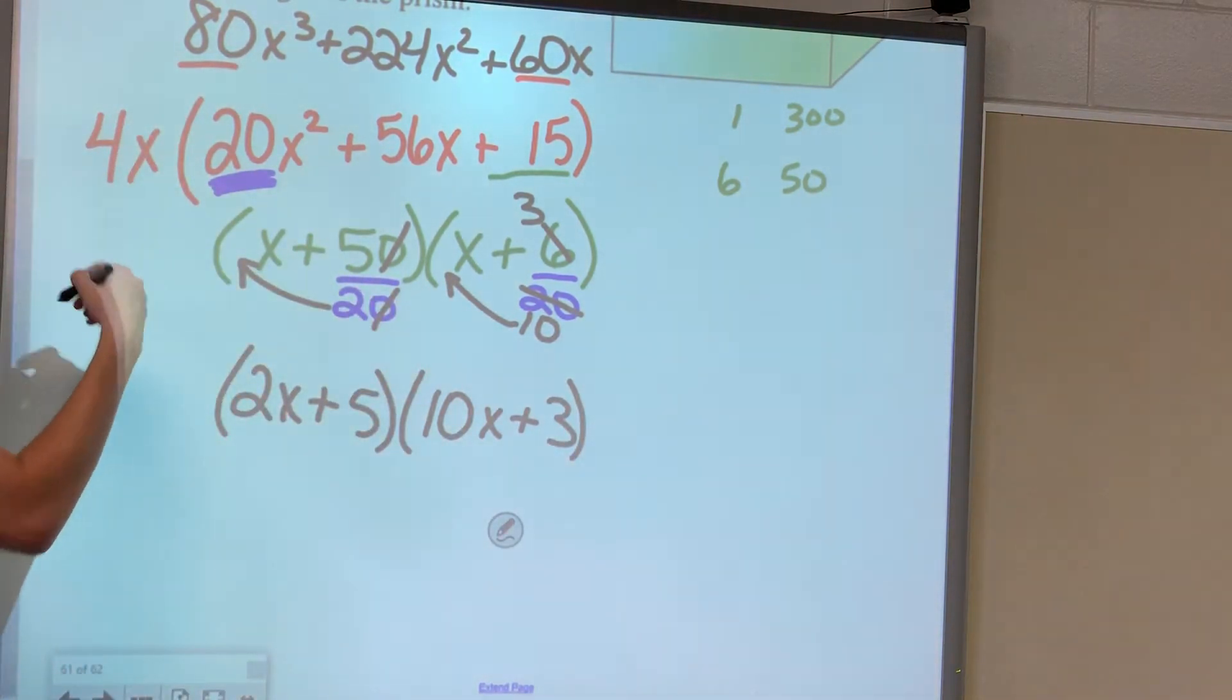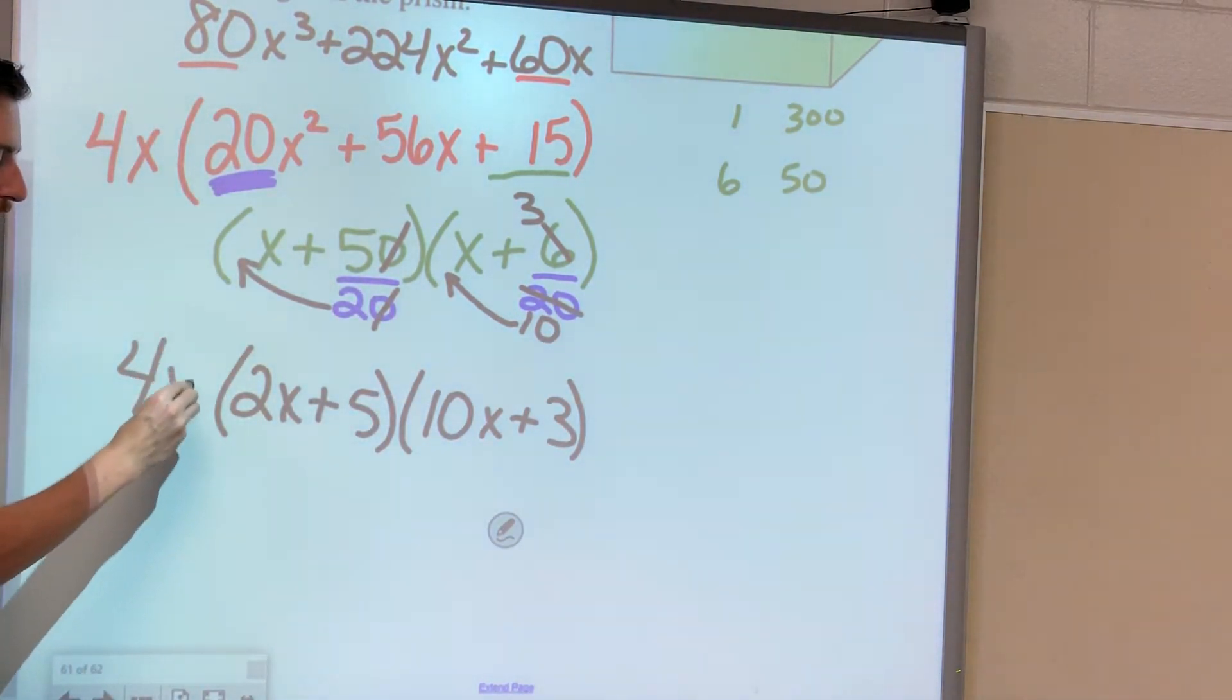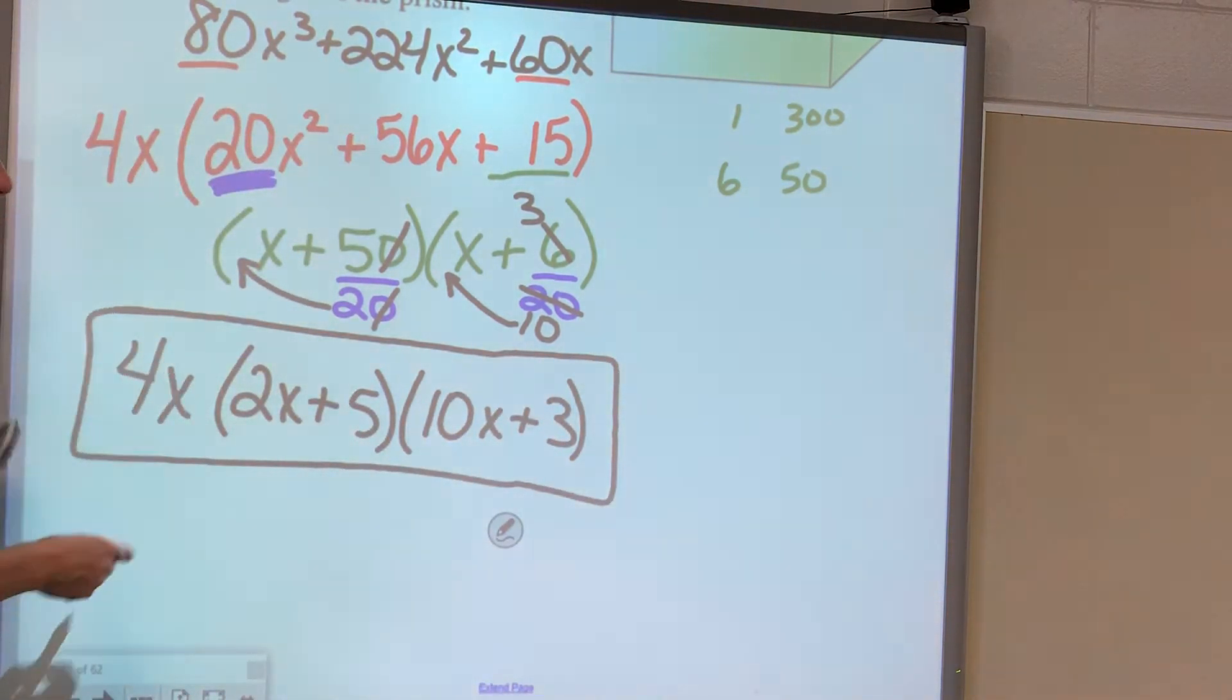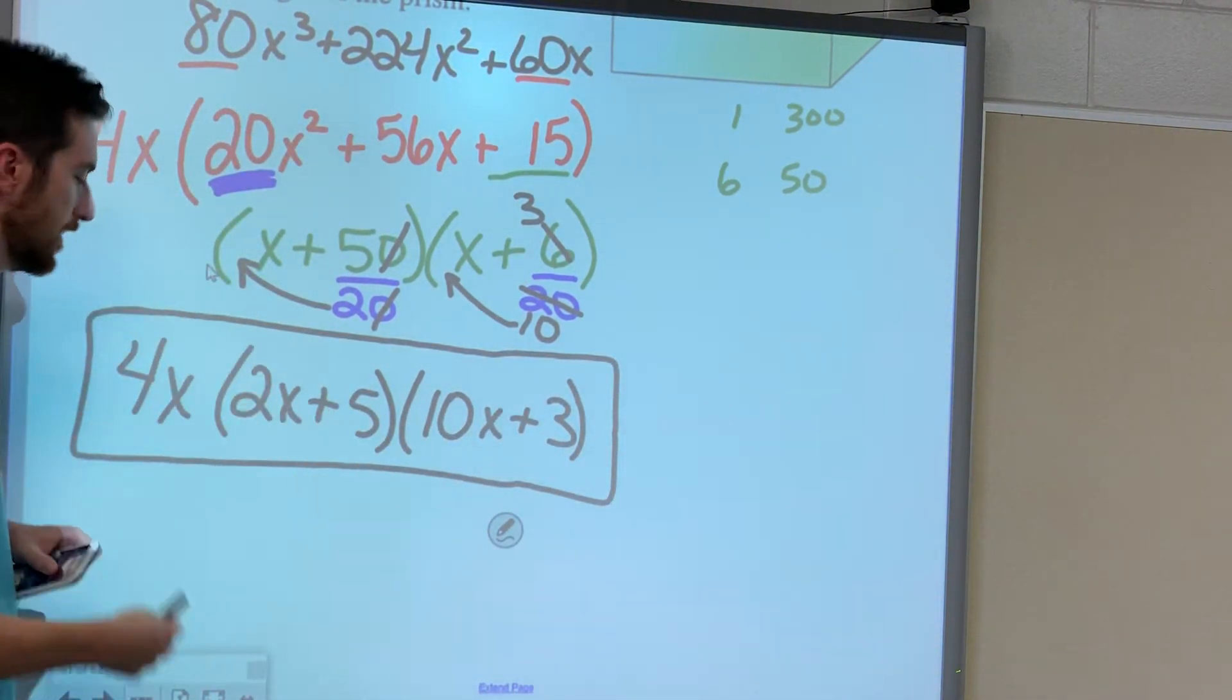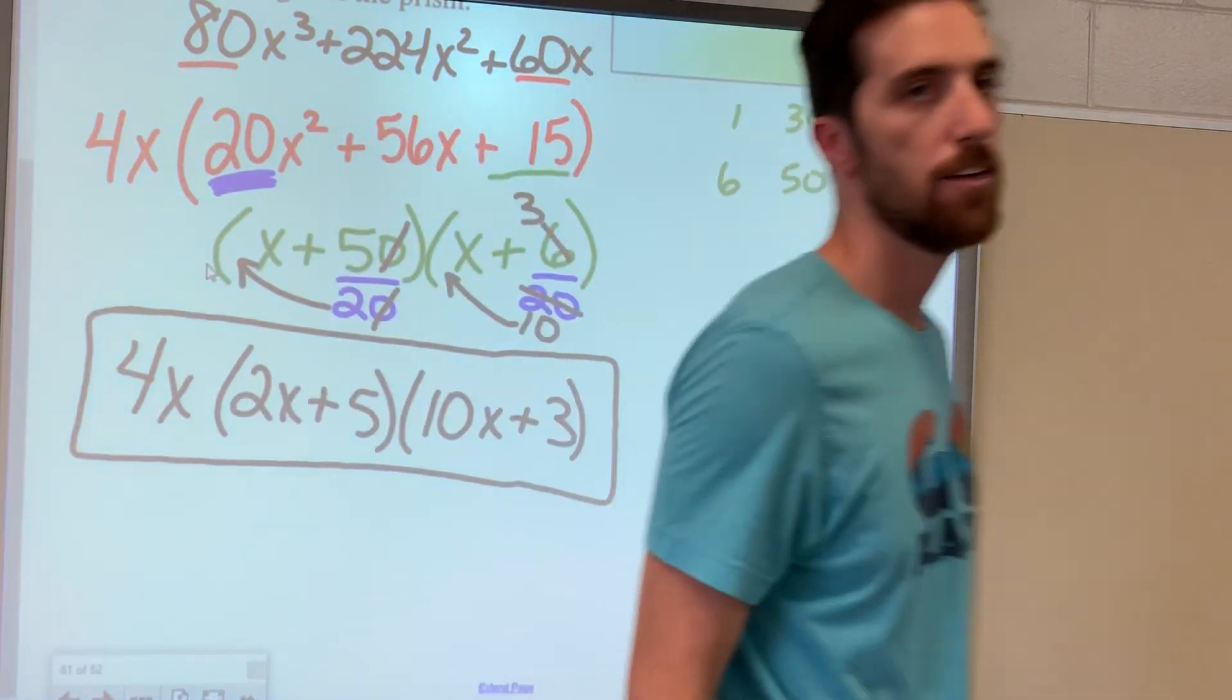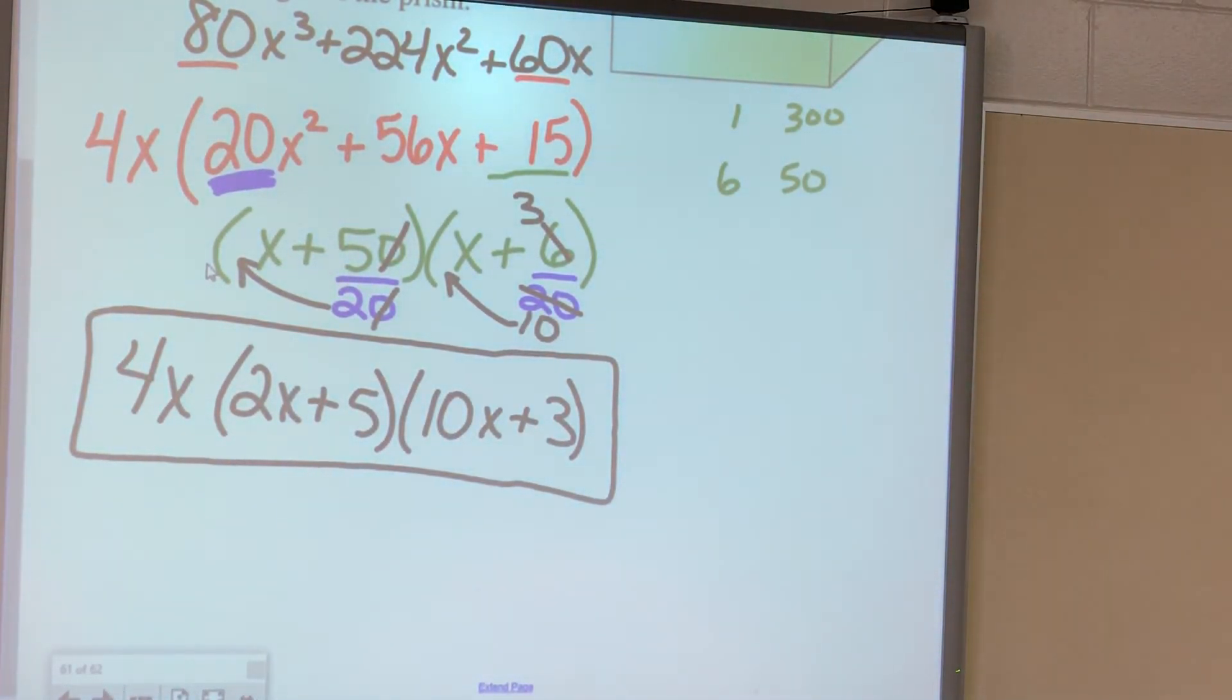And don't forget, we kicked out the 4x, the greatest common factor, from the get-go. So these are the three lengths, length, width, and height. You've got 4x, you've got 2x plus 5, and you've got 10x plus 3. Woo! Woo! Woo!